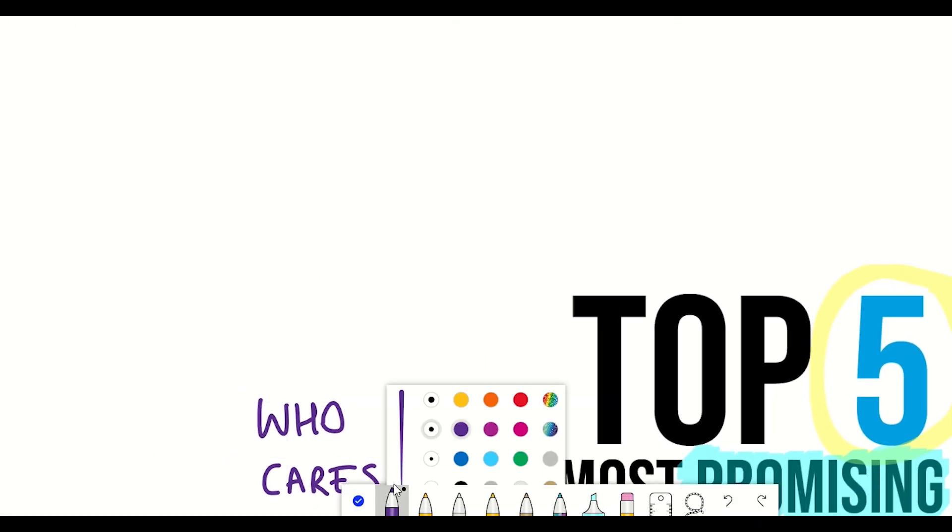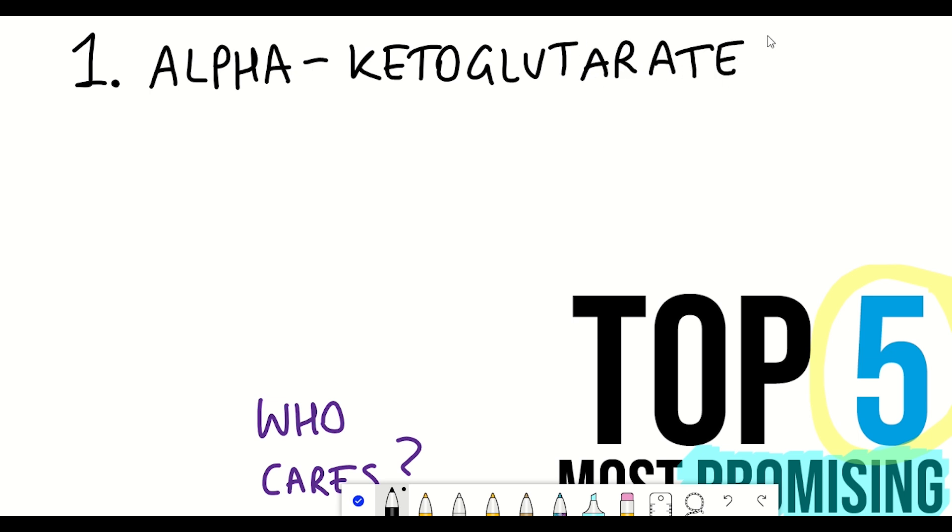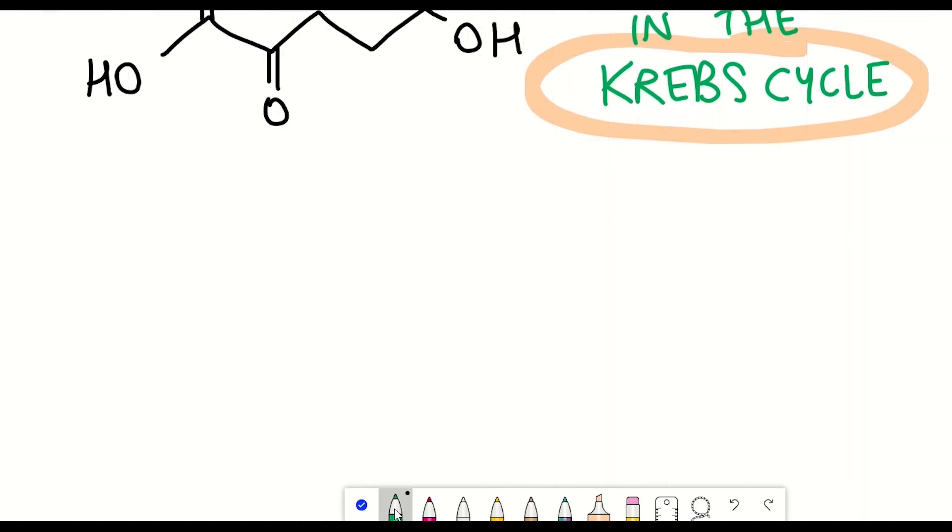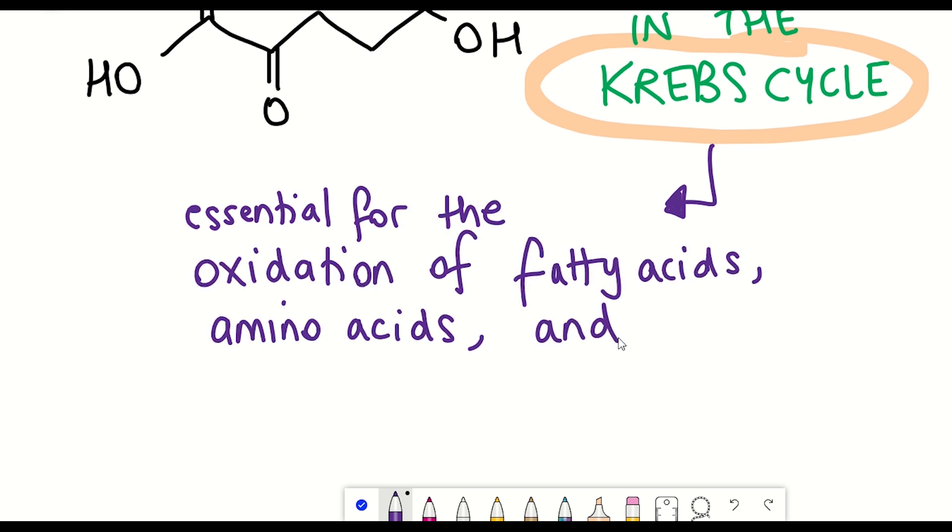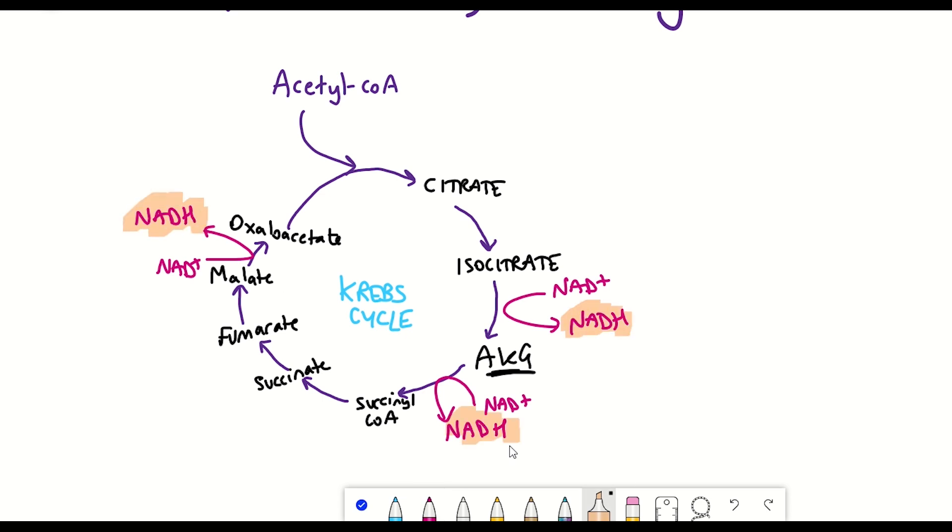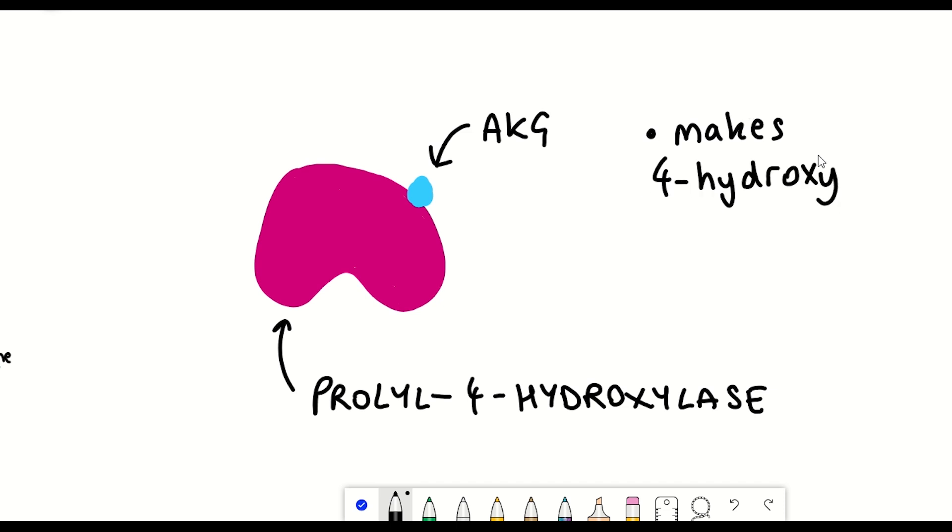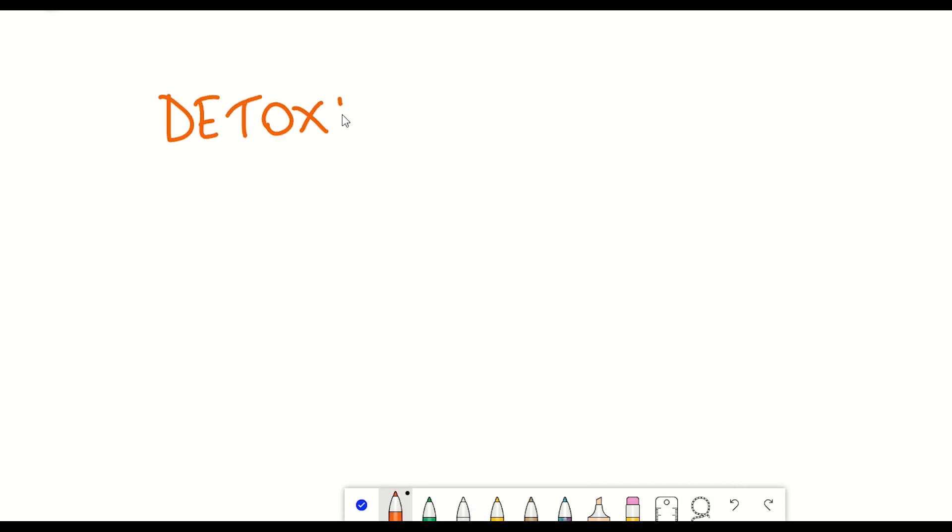The first compound is alpha-ketoglutarate. Alpha-ketoglutarate, otherwise referred to as AKG, is a really important metabolite found within your cells playing a key role in the Krebs cycle. This is essential for the oxidation of fatty acids, amino acids, and glucose to generate ATP, the energy source of your cells. But AKG can also act as a cofactor for different enzymes, including prolyl-4-hydroxylase, which is used to generate 4-hydroxyproline that's important for the synthesis of collagen. And AKG also plays an important role in detoxifying ammonia.